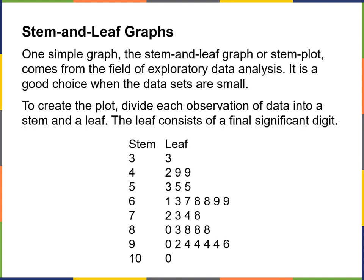On the left in the stem, you're going to put a three. And then in the leaf, if there's somebody who has 33 or 34 or 35, this is where we would put that — it's the final significant digit. In this case, there's only one person who has a grade in the 30s, and that's the person who earned a 33.